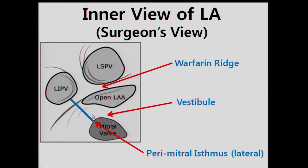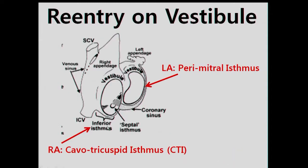This is the surgeon's inner view of the left atrium. These are the orifices of the left superior and inferior pulmonary veins, and this is the orifice of the left atrial appendage. You can appreciate the obvious ridge between the left superior pulmonary vein and the orifice of the left atrial appendage. This is the mitral annulus, and this is the vestibule. We call this linear line between the anterior border of the left inferior pulmonary vein and the lateral mitral annulus the perimitral isthmus. Critical isthmus in right-side vestibule reentry is the cavotricuspid isthmus, and critical isthmus in left-side vestibule reentry is the perimitral isthmus.